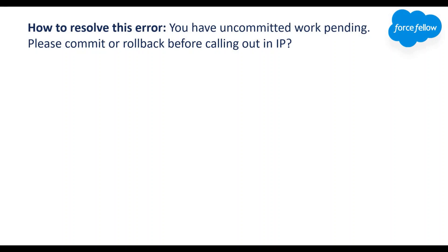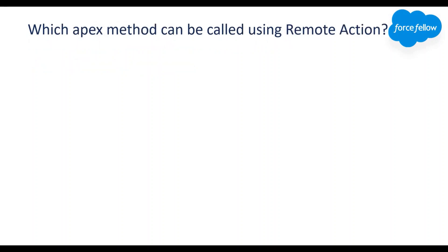The error 'You have uncommitted work pending, please commit or rollback before calling out' generally occurs when we first perform a DML operation and then try to make a callout in the same transaction, because Salesforce doesn't allow callouts if there is any uncommitted DML operation. If in our integration procedure the first step does a DML and the second step makes a callout using HTTP action, we can resolve this by marking one of the steps with the Chain on Step option so that step executes in a different transaction.